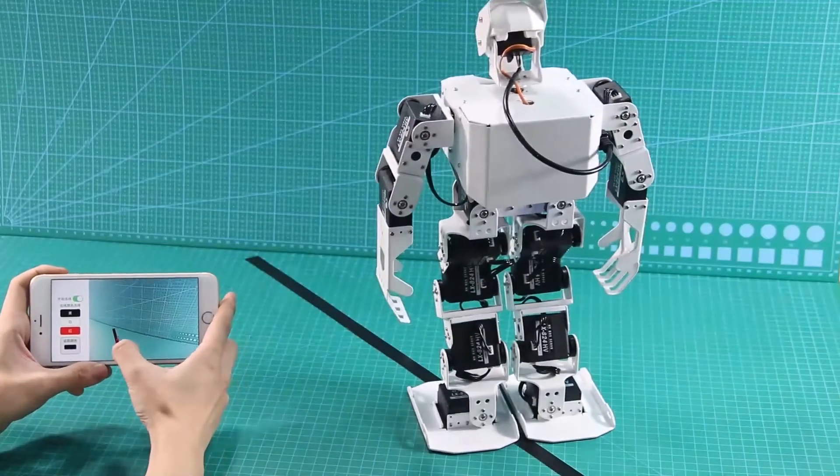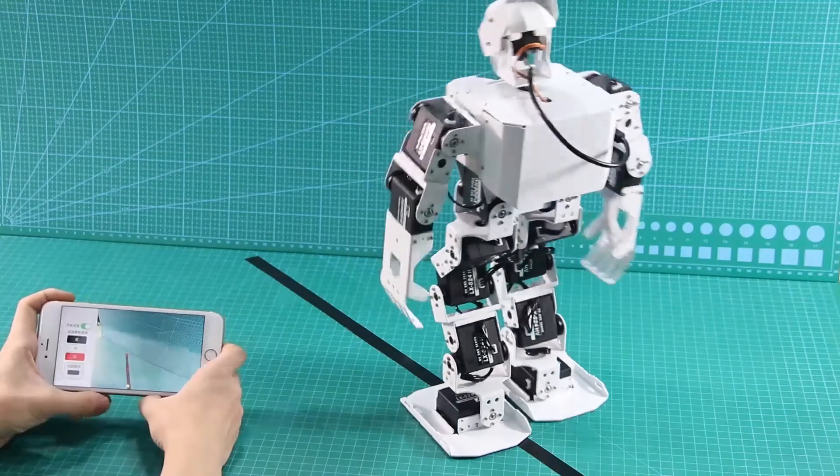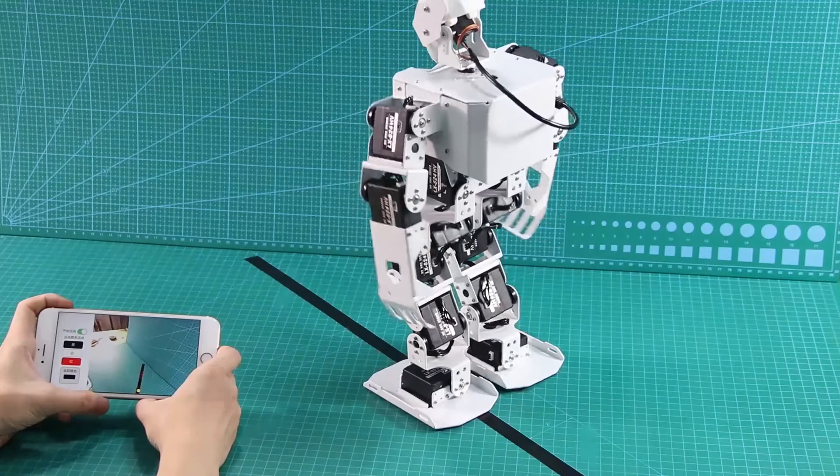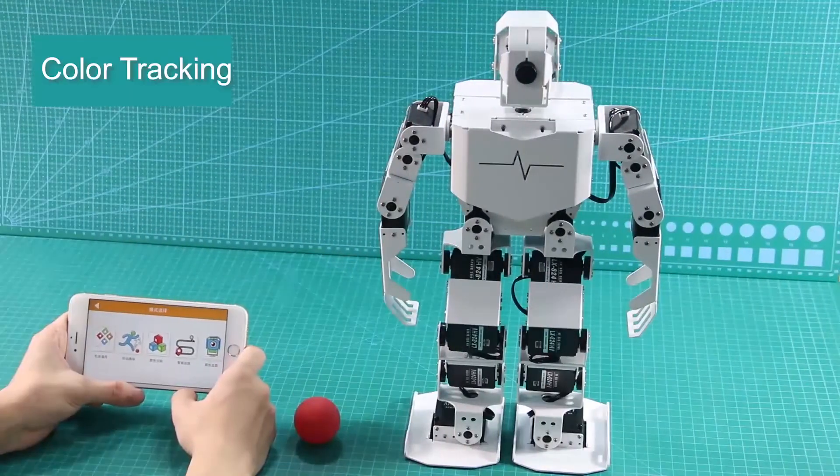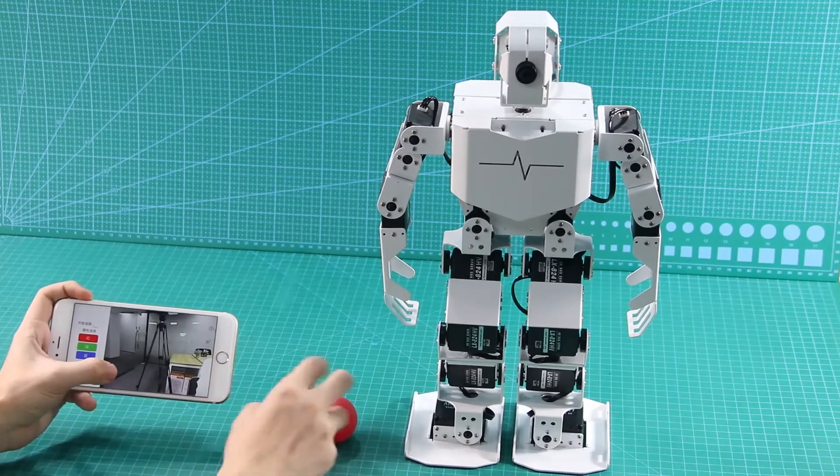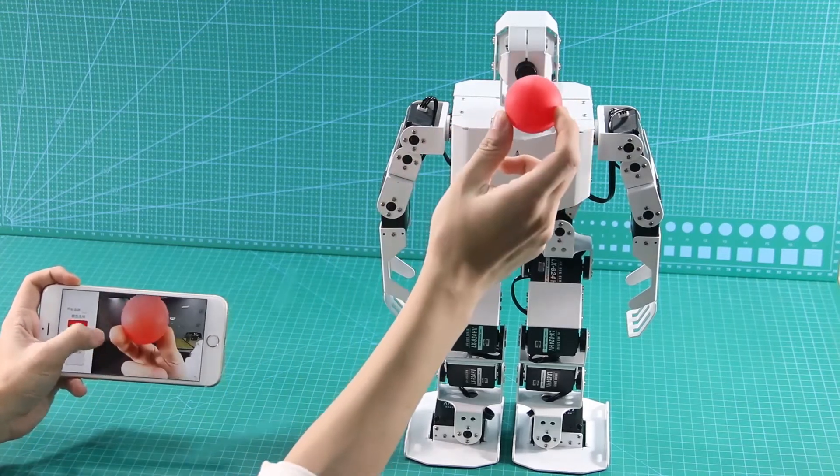Select the color and then TonyPi's camera will track the color to move.